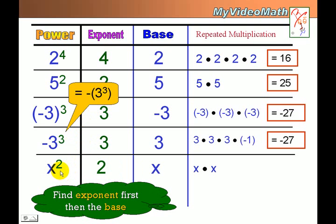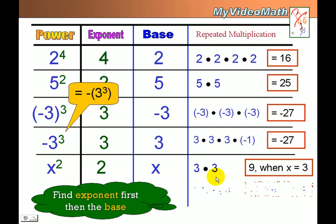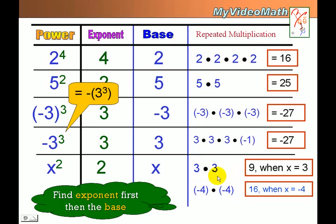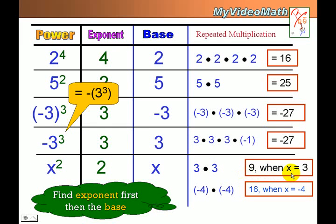x squared: the exponent is 2, the base is x, and the factor form is x times x. But when x equals 3, x times x becomes 9. When x equals negative 4, it becomes negative 4 times negative 4, which is 16. So when a power has a variable in it, it does not have a value until we assign a value to the variable.